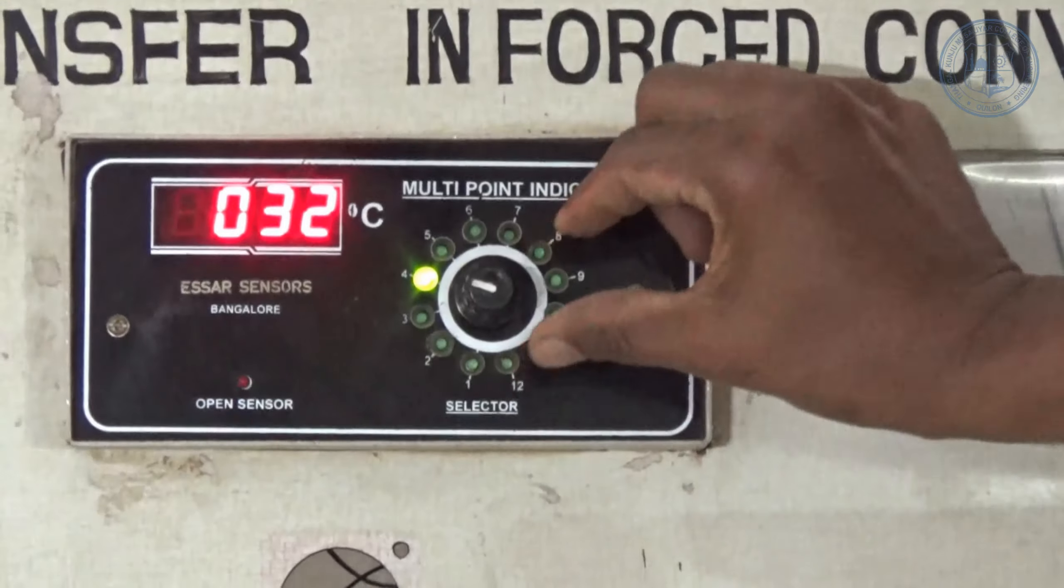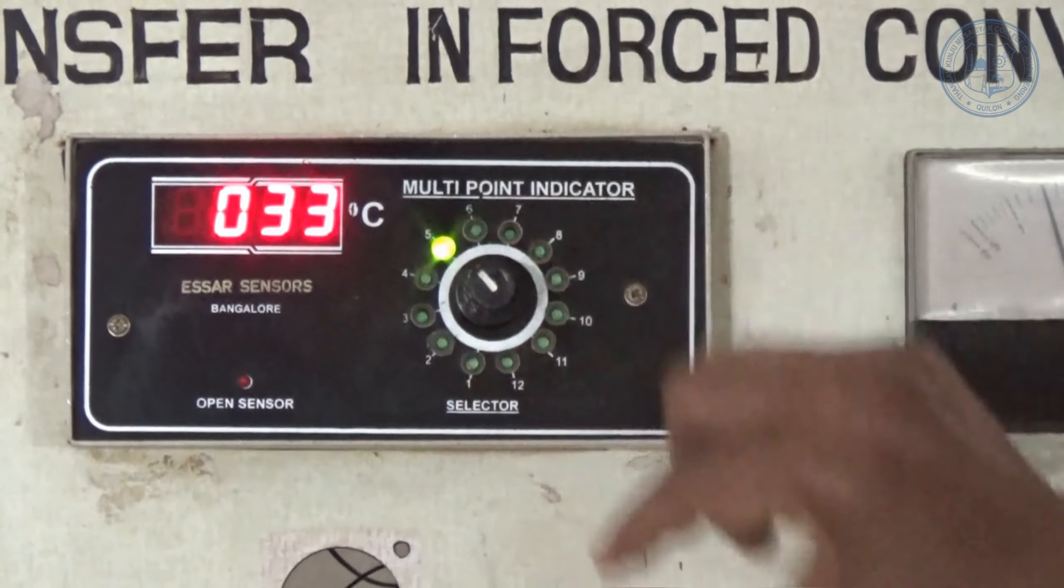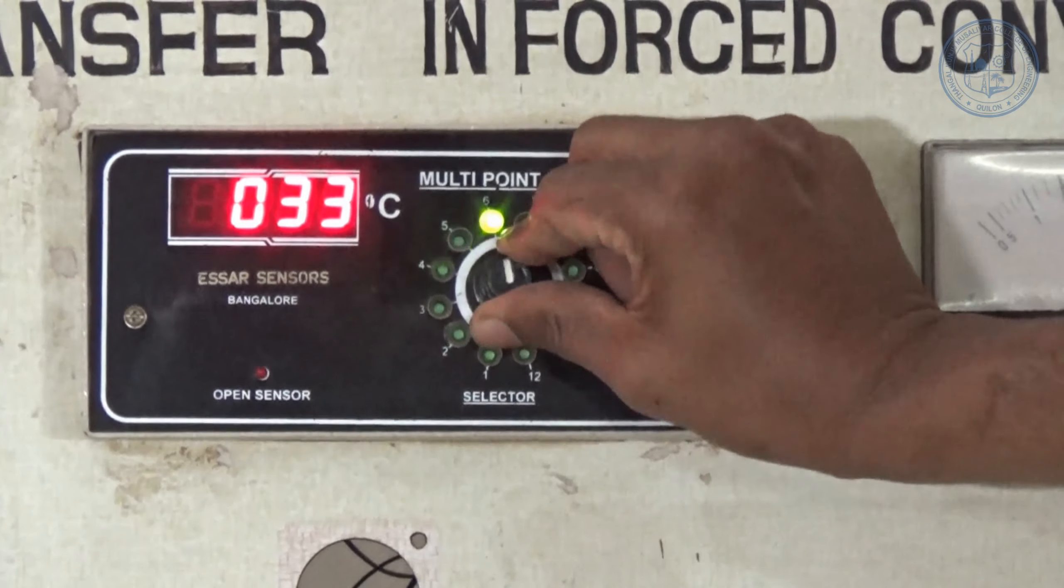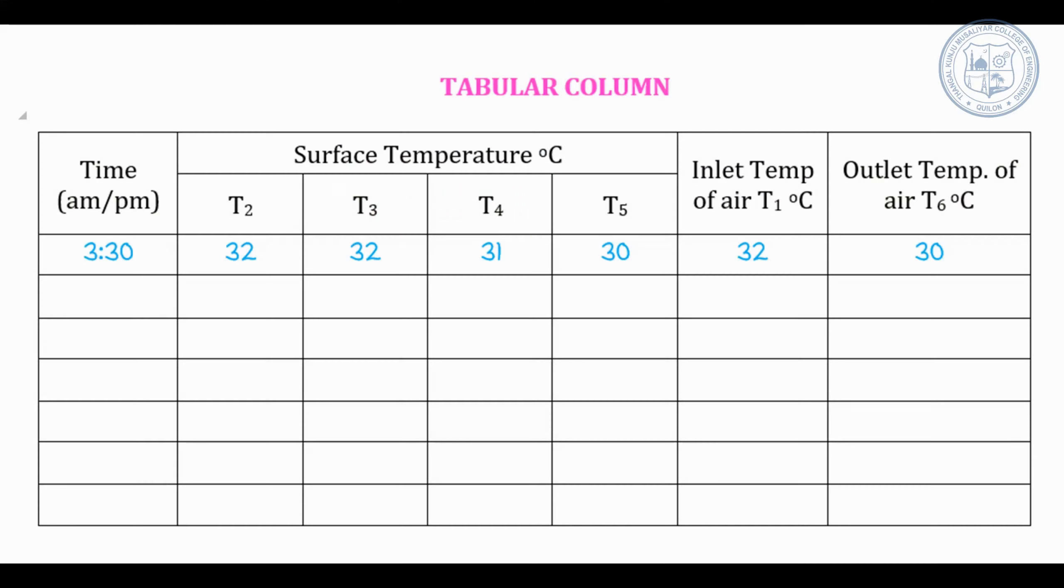Note the initial readings of all thermocouples through the temperature indicator. Write these initial values in the tabular column.